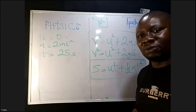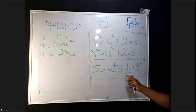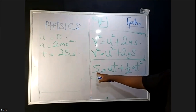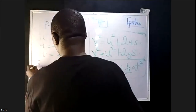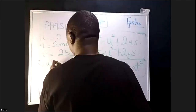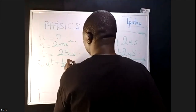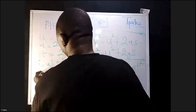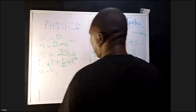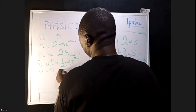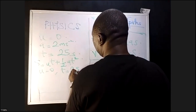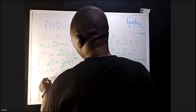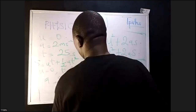Which equation are we going to use? We are looking for distance S, so we use the third equation: S = UT + ½AT². Our U is zero, T is 25 seconds, and A is 2 meters per second squared.